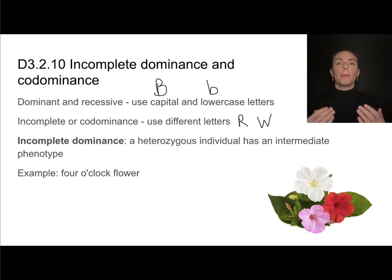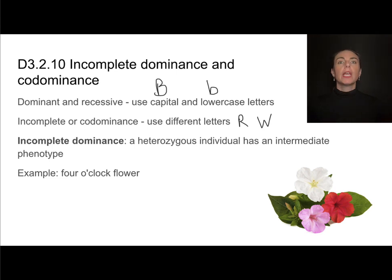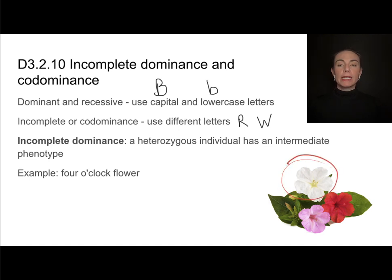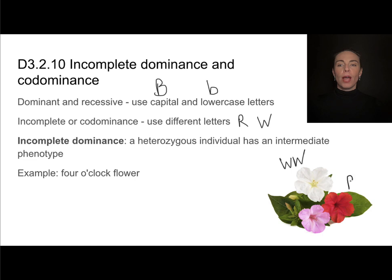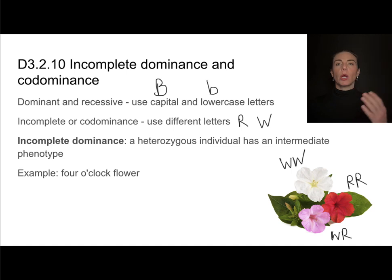In co-dominance, both alleles are expressed in the phenotype for a heterozygous individual. In incomplete dominance, the heterozygous individual will have an intermediate phenotype. For example, in the four o'clock flower, pure breeding colors are white and red — individuals are either homozygous for white or homozygous for red. A heterozygous individual will have the intermediate phenotype: pink. If they were co-dominant, the heterozygous individual would instead show something like white and red spots.